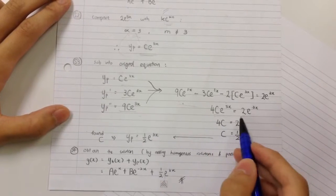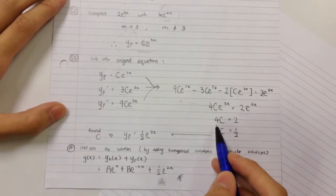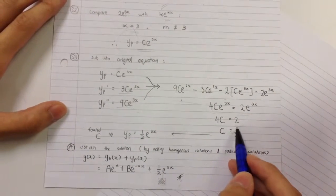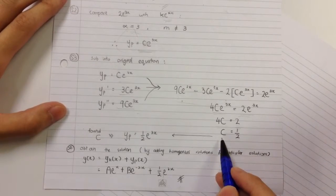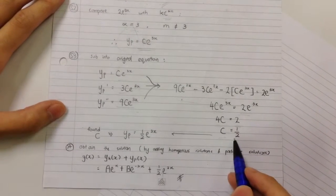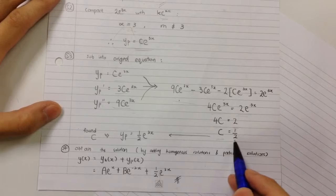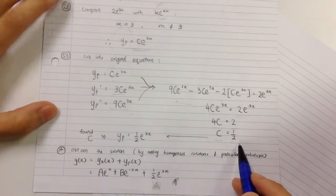I equate both sides. 4C equals 2, so C equals 1/2.